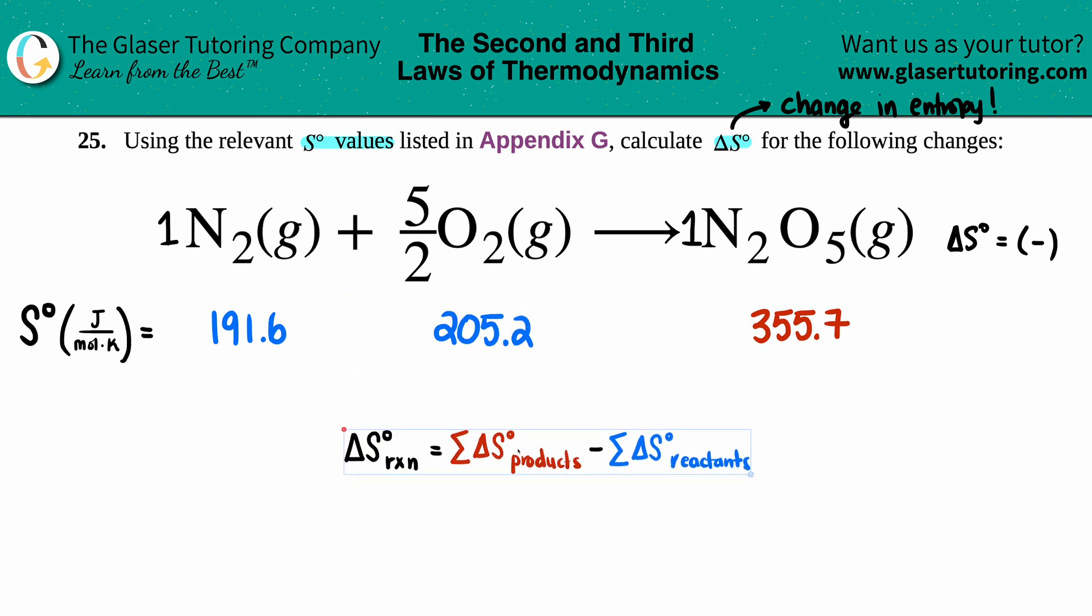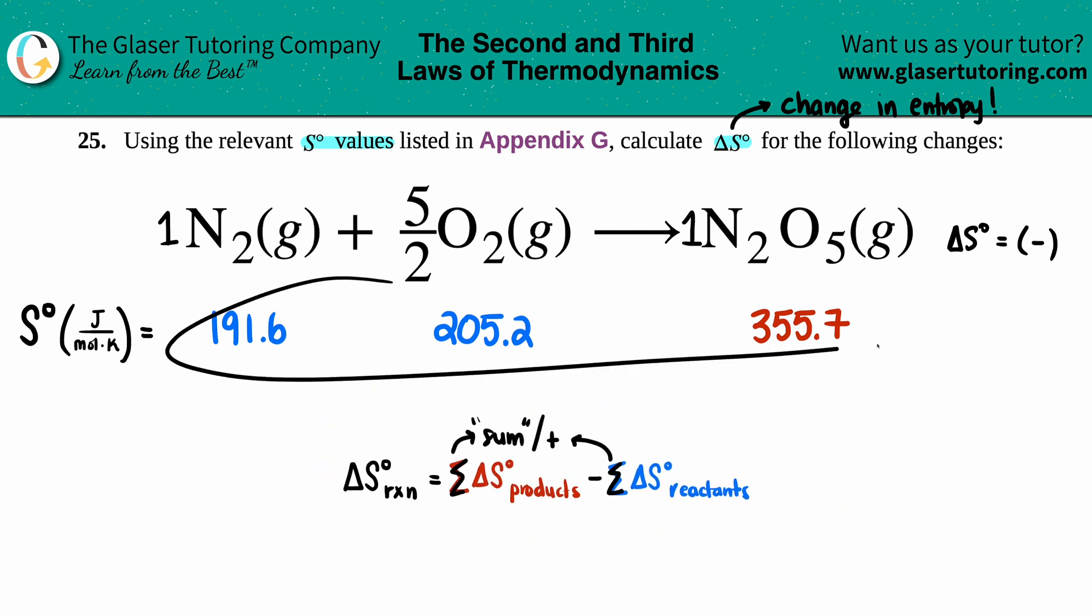Delta S for the whole entire reaction is the sum—that's this special symbol, which literally means addition—the sum of the products minus the sum of the reactants. I have to add up the blues and tally up the reds and put them into the formula.